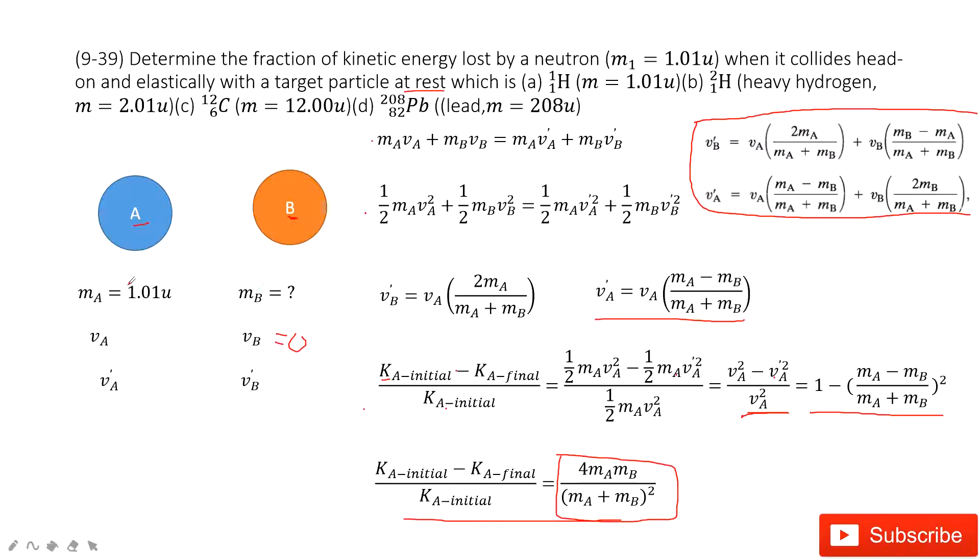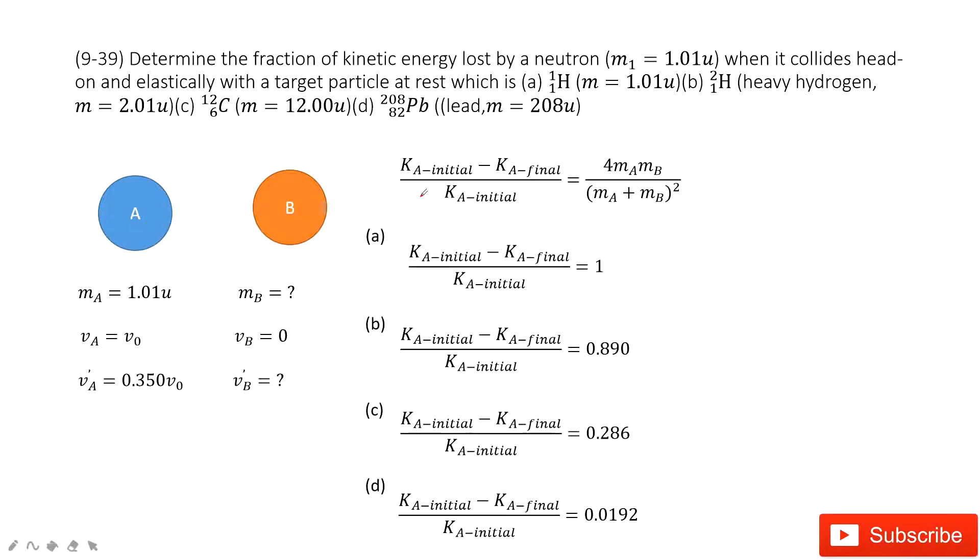Now the A is given. The B is in these four situations: A, B, C, D. Four situations. Can you do that? Sure. Because you can see, for the first one, A is 1.01 mu, B is 1.01 mu. Easy. Just one, right?